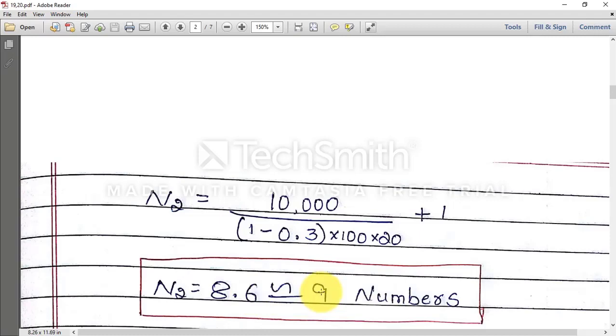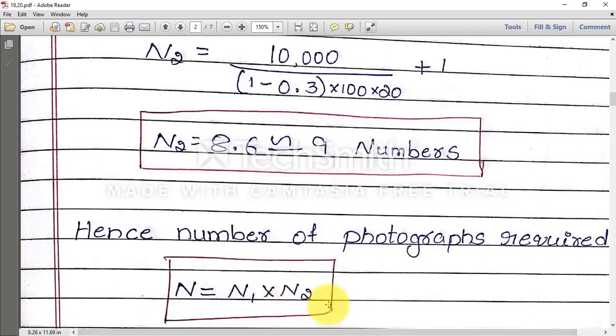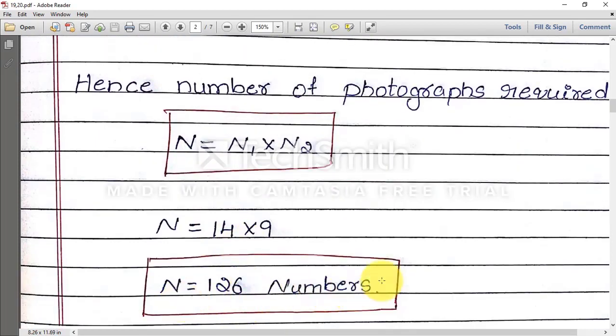Therefore, hence the total number of photographs required is equal to N = N1 × N2. What is N1? Number of photographs in one flight line. N2? Number of flight lines. So you will get total number of photographs N = 14 × 9 = 126 numbers.